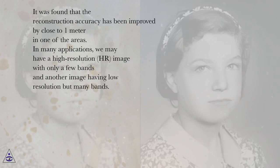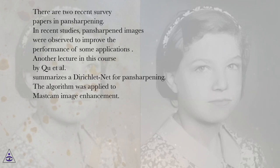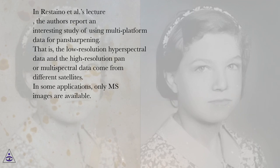In many applications, we may have a high-resolution image with only a few bands and another image having low-resolution but many bands. Pan-sharpening is an image fusion approach that fuses one high-spatial resolution image with another low-resolution multispectral (MS) image. Earlier pan-sharpening algorithms are limited to images where the panchromatic band overlaps with the MS bands; however, recent advancements have extended the approach to non-overlapping bands. There are two recent survey papers in pan-sharpening, and pan-sharpened images were observed to improve the performance of some applications. A lecture by Chu et al. summarizes a Dirichlet net for pan-sharpening, applied to MassCam image enhancement. In Ristaino et al.'s lecture, multi-platform data is used for pan-sharpening, where low-resolution hyperspectral and high-resolution pan or multispectral data come from different satellites.